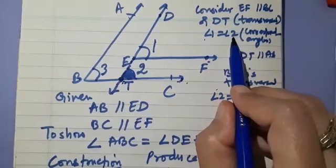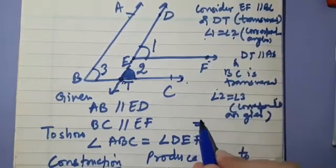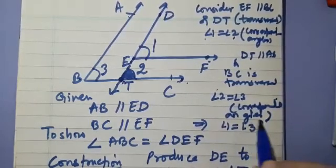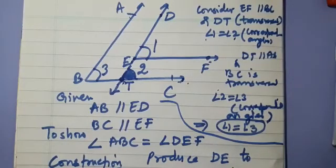So angle 1 is equal to angle 2, and angle 2 is equal to angle 3. This implies angle 1 is equal to angle 3. This is what we were supposed to prove. I hope it is clear to you.